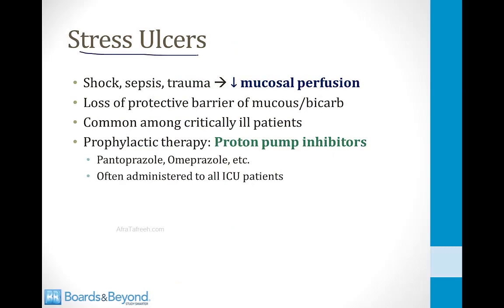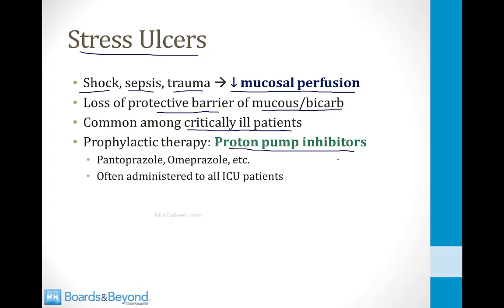Stress ulcers are another form of acute injury to the stomach lining, occurring in patients with shock, sepsis, or trauma. Any of these causes can lead to poor perfusion of the gastric mucosa, resulting in loss of the protective barrier of mucus and bicarb. This is common among critically ill ICU patients. As a result, most ICU patients are placed on prophylactic proton pump inhibitors such as pantoprazole and omeprazole.